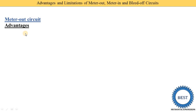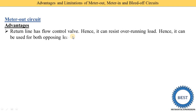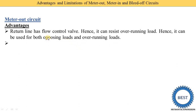In a meter out circuit, the flow control valve is installed at the outlet of the extension as well as the retraction strokes. So the return line has a flow control valve, hence it can resist overrunning load. Hence it can be used for both opposing loads and overrunning loads. This is one of the advantages.